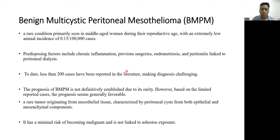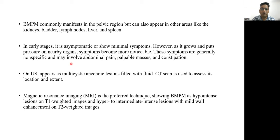Regarding reported cases in India, it is still less than 20 cases. The prognosis of BMPM is not definitively established due to its rarity; however, based on limited reported cases, the prognosis seems generally favorable. It is a rare tumor originating from mesothelial tissue, characterized by peritoneal cysts from both epithelial and mesenchymal components. It carries minimal risk of becoming malignant and is not linked to asbestos exposure.